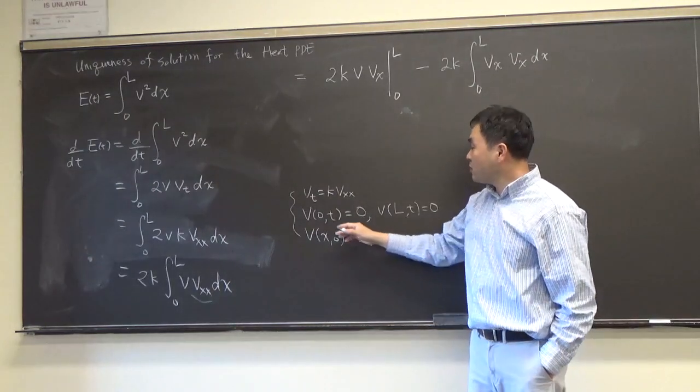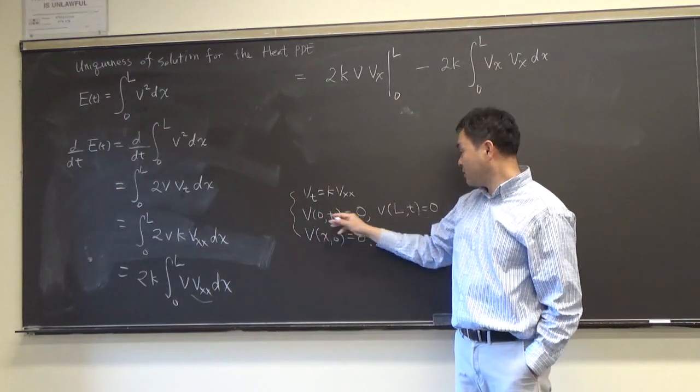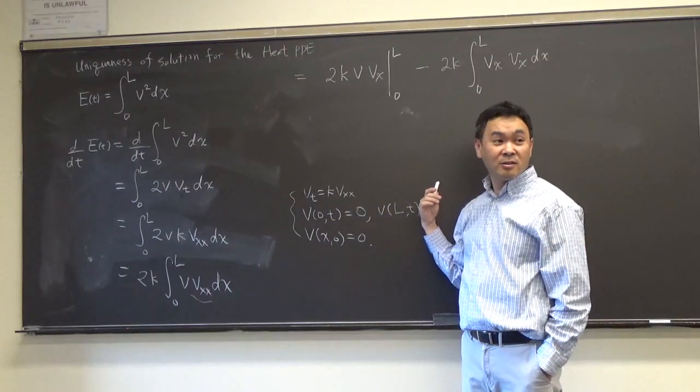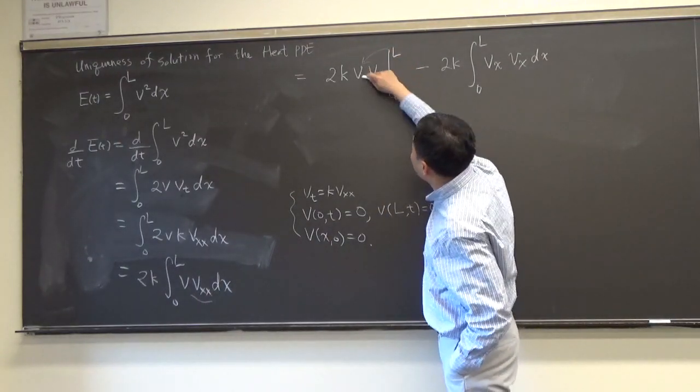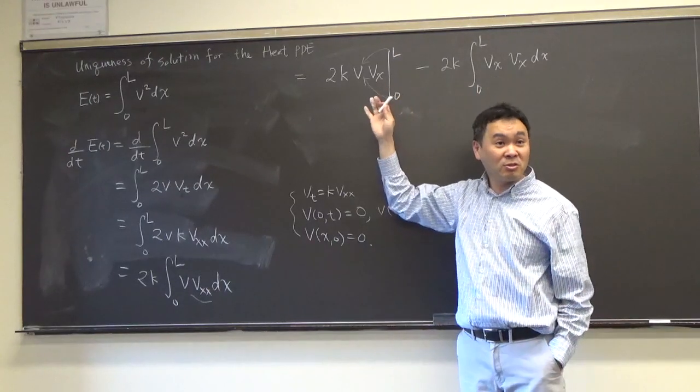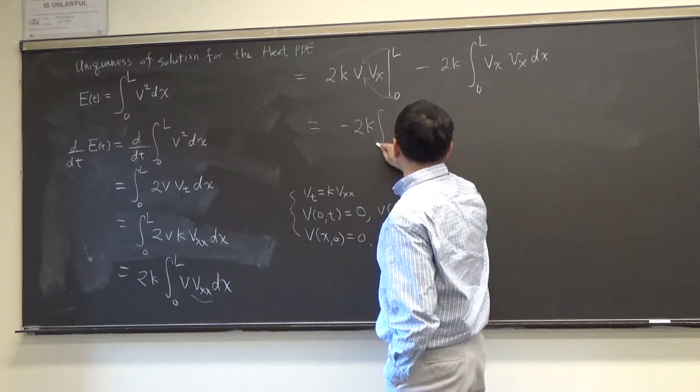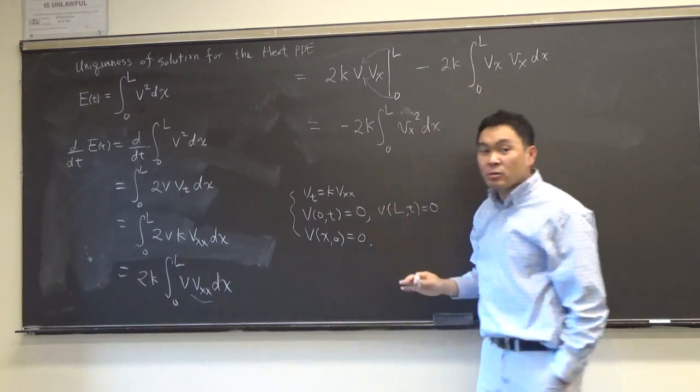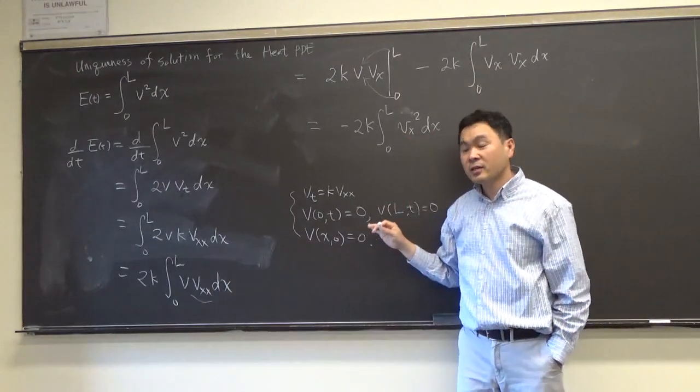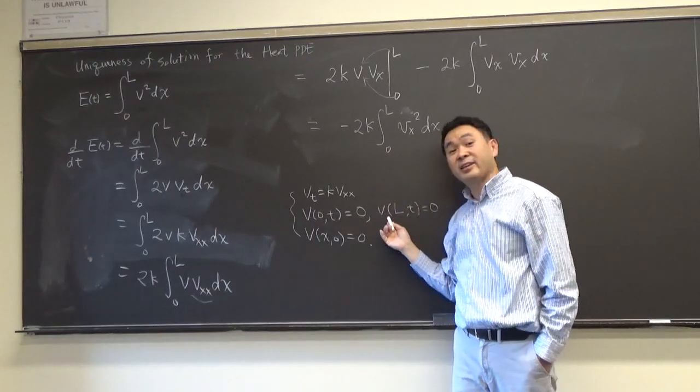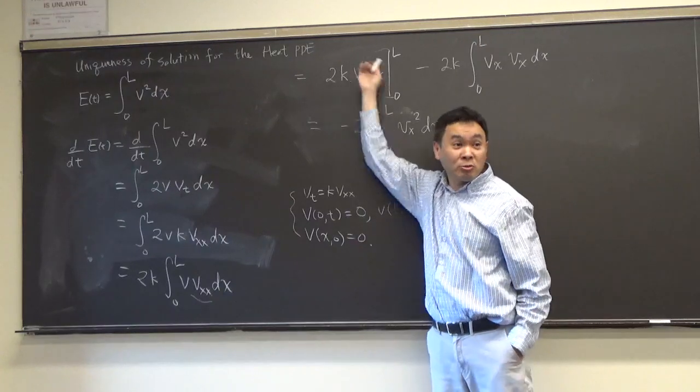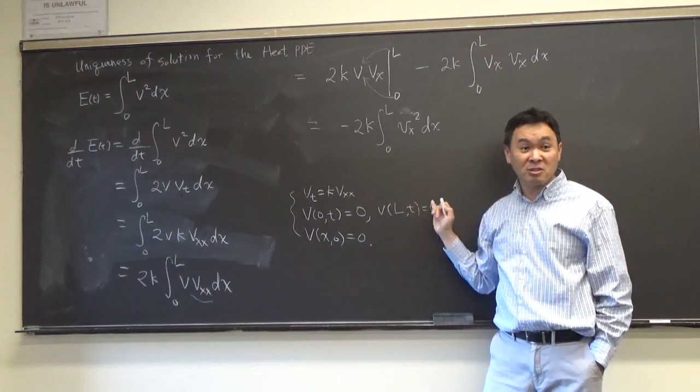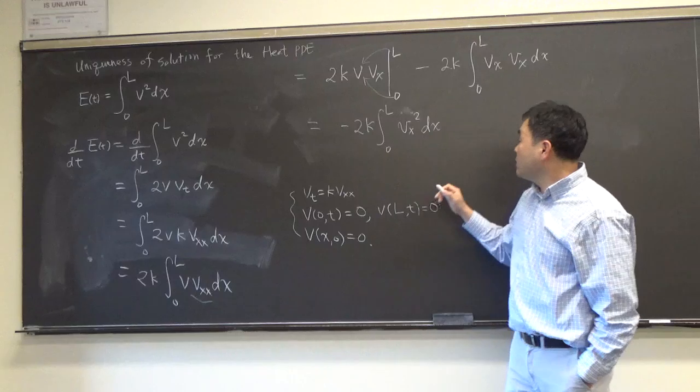Now, if you plug in 0 into x or L into x, regardless of the value of t, this will give you 0, right? So, when L goes into v and 0 goes into v, they both give you 0. So, you end up with negative 2k, 0 to L, v_x, squared dx. And, by the way, if the boundary conditions were Neumann condition where you have v_x, v_x there, in that case, this part will also become 0. So, although I'm only showing you for the Dirichlet condition, the same proof holds for the Neumann condition as well, right?